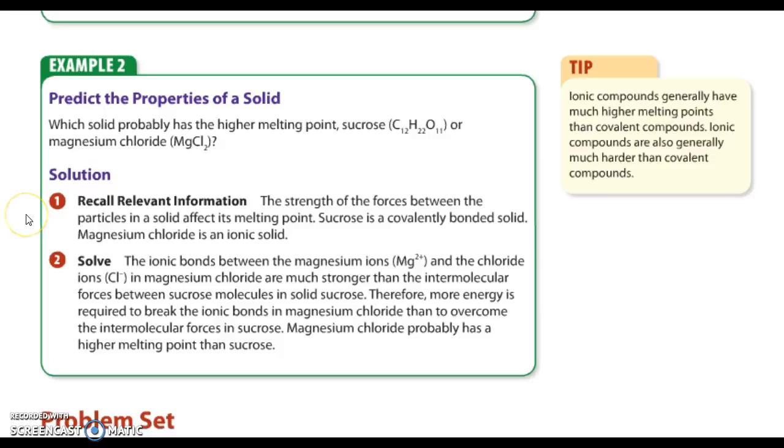Recall relevant information. The strength of the forces between the particles in a solid affect its melting point. Sucrose is a covalently bonded solid. The electrons are shared. Magnesium chloride is an ionic solid because it is a metal and a non-metal, and they are giving and taking electrons.